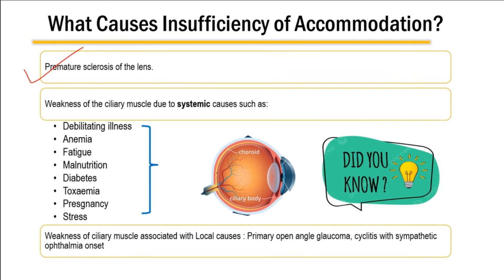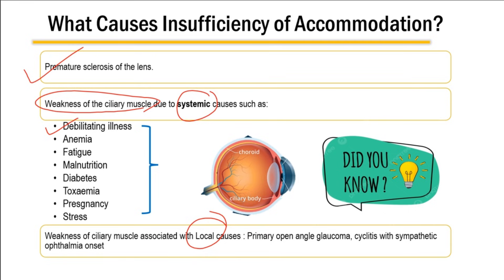Accommodation insufficiency could be because of premature sclerosis of the lens, or due to systemic or local causes which cause weakness of the ciliary muscle. These include debilitating illness, fever, anemia, fatigue, malnutrition, diabetes, toxemia, pregnancy, and even stress. All these conditions can affect the ciliary muscle leading to deficient or insufficient accommodation.